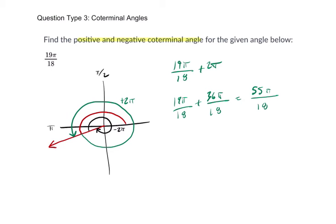Okay, now the other one: 19π over 18, and we're going to subtract 2π. So we're going to subtract 36π over 18, and that's going to get us negative 17π over 18.